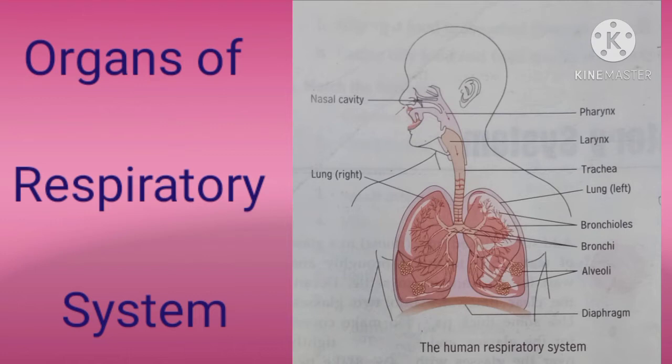Human beings have a well-developed respiratory system that comprises of the nose, nasal cavity, pharynx, larynx, trachea, bronchi, and alveoli. In the human respiratory system, lungs are the main respiratory organs where exchange of gases takes place.